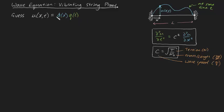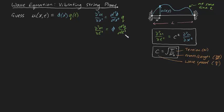Now we need to plug this into the wave equation and see what we get. Let's differentiate with respect to x twice first. The second partial derivative of u with respect to x squared is going to be d squared phi dx squared times q. And the second partial derivative of u with respect to t squared will be phi times d squared q dt squared.